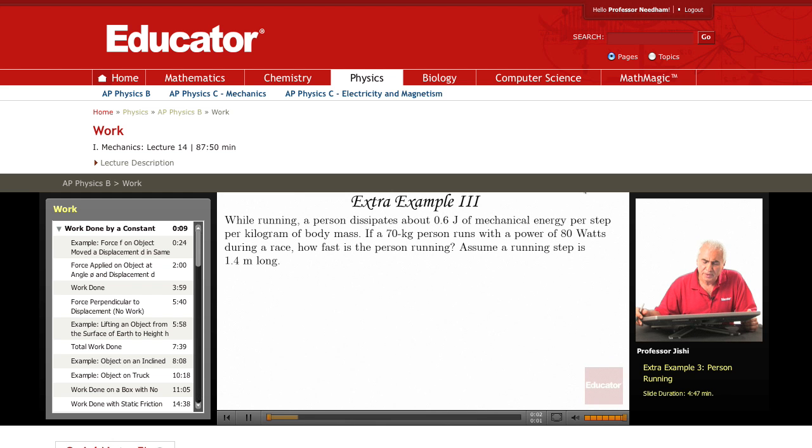While running, a person dissipates about 0.6 joules of mechanical energy per step, per kilogram of body mass. Now we have a 70 kilogram person who runs with a power of 80 watts during a race. How fast is the person running? Assume that the running step is 1.4 meters long.